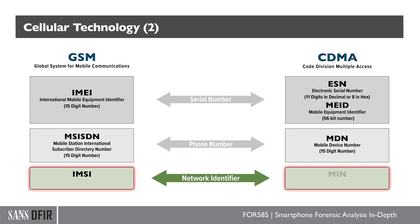For IMSI or MIN — when we look at these identifiers, this is how the network knows who you are when you attempt to use that phone. IMSI is going to be for GSM, and MIN, or the Mobile Identification Number, is going to be for CDMA.